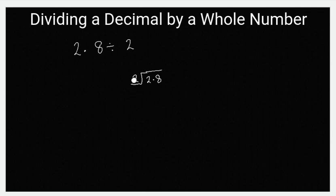How many twos can you find in two? Obviously one. One times two is two. You subtract, you're left with zero. You bring down what you have here with the decimal point: 0.8.